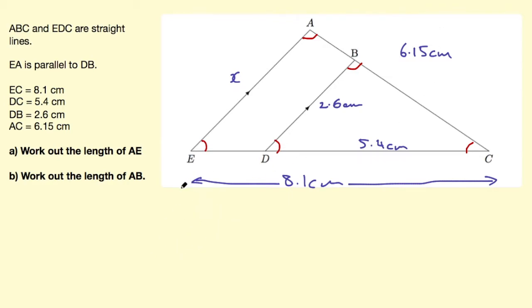So the rule that we can use is angle angle angle. If all angles are equal, then these triangles must be similar.